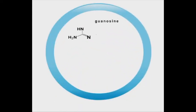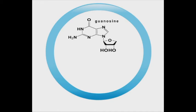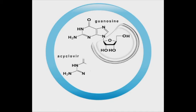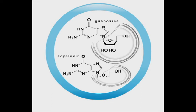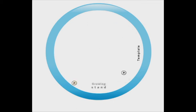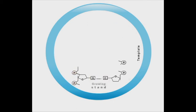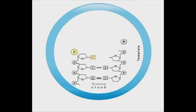Acyclovir triphosphate structurally resembles guanosine triphosphate, but it lacks the true sugar part. Guanosine is a fundamental structure of the viral DNA.